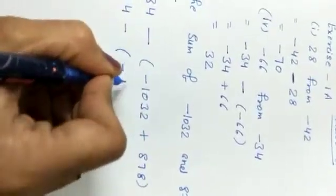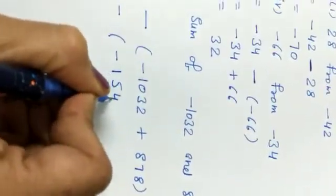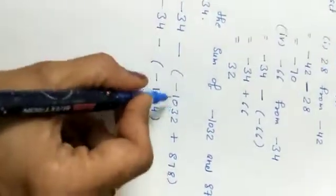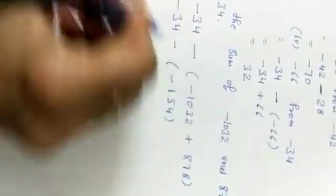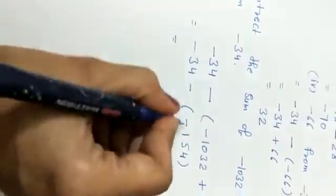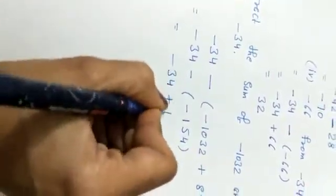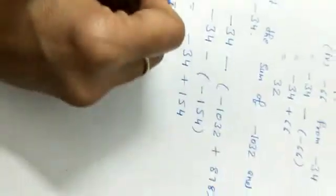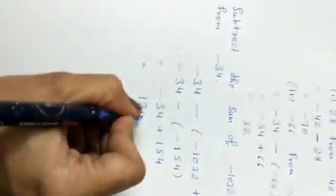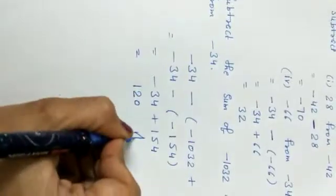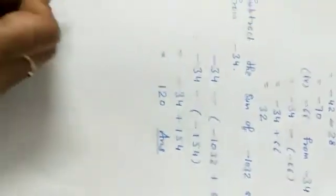We get minus 154. One is positive, one is negative, so they subtract. Then minus into minus gives plus. The final answer is positive 120.